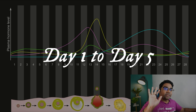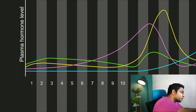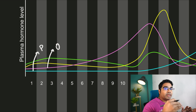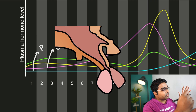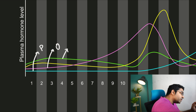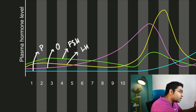During the first five days of the menstrual cycle, progesterone levels (the blue line) and estrogen levels (the pink line) are very low. This prevents inhibition of the anterior pituitary gland, so there is a significant level of FSH (the green line) as well as LH (the yellow line). FSH then causes the development of follicles in the ovaries.